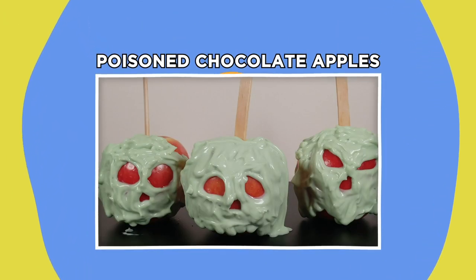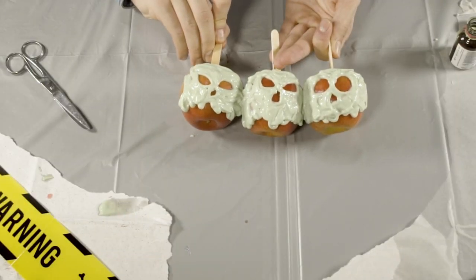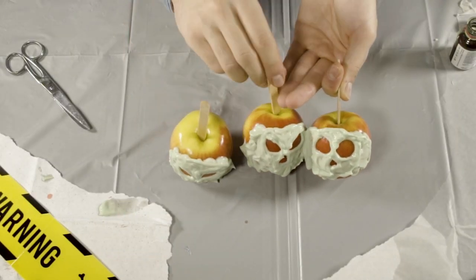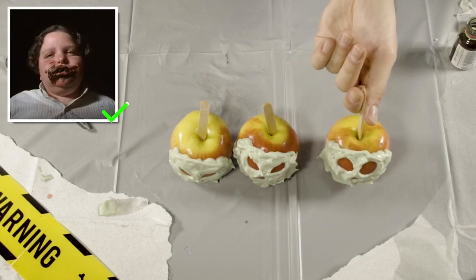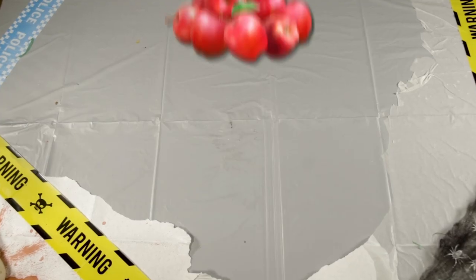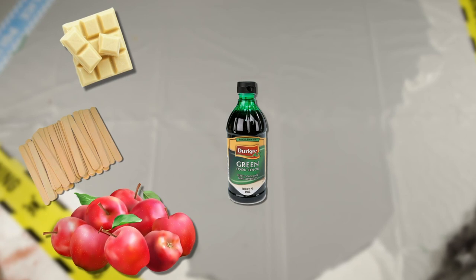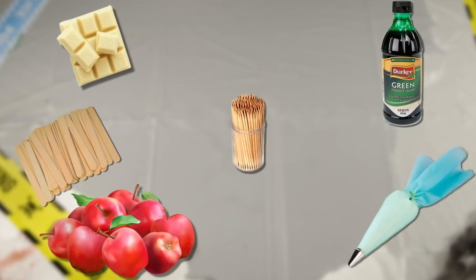Poisoned chocolate apples. Remember the poisoned apple from Snow White? I'm about to show you how to recreate it. Only these apples will probably send you into a sugar coma, rather than a sleeping death. To make this Disney-inspired craft, just grab yourself some apples, some lollipop sticks, white chocolate, green food dye, a piping bag and some toothpicks. Ready?